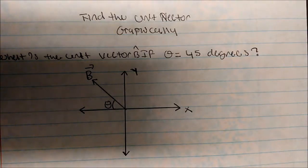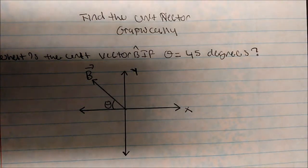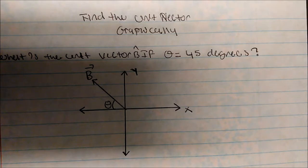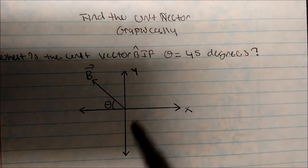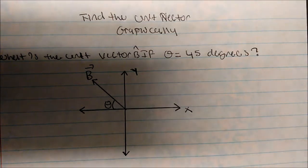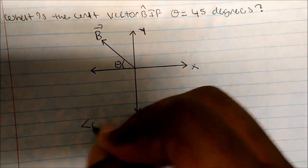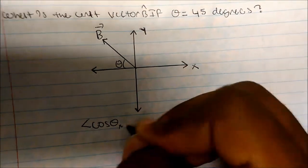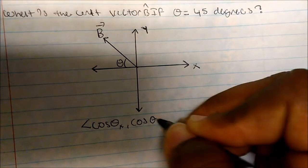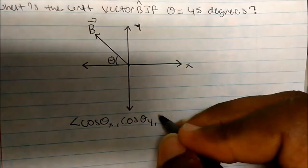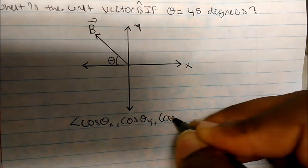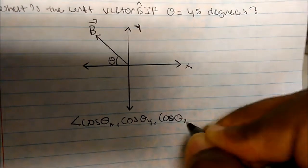Typically on a test you're given something like this where they're asking you to find a unit vector of some vector with a magnitude. They're asked to find a unit vector, and we said anytime we have any sort of vector like this with some sort of angle, the unit vector in the x-direction is just cosine of theta x, in the y-direction is cosine of theta y, and in the z-direction is just cosine of theta z.